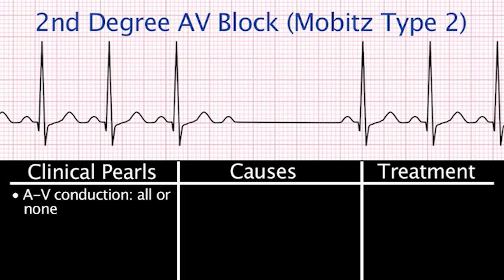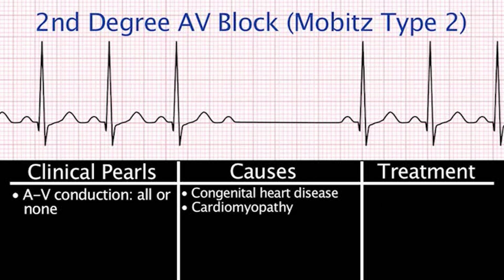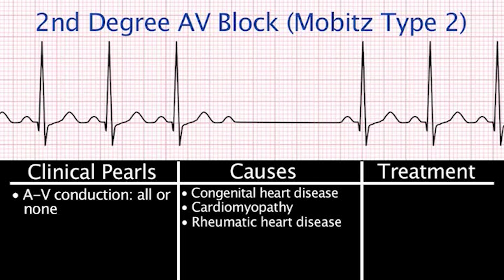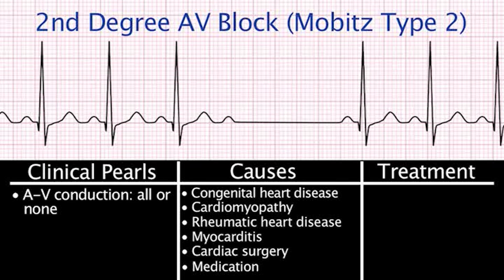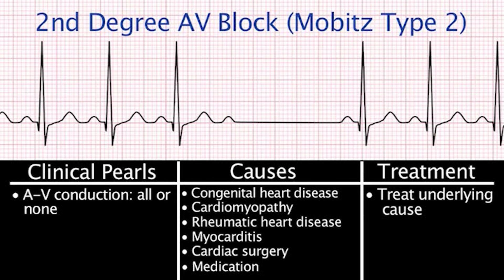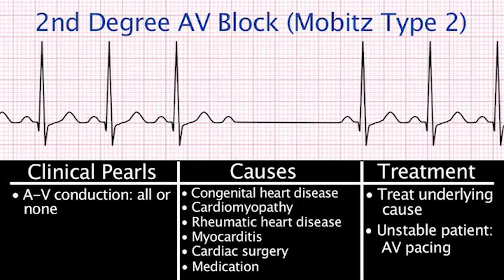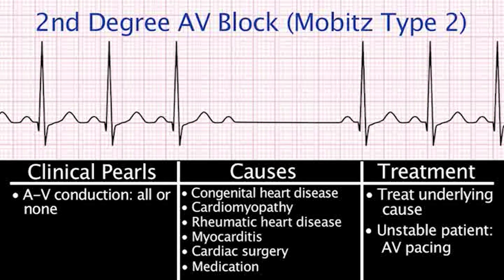Causes of Mobitz type 2 are the same as the other blocks: congenital heart disease, cardiomyopathy, rheumatic heart disease, myocarditis, surgical intervention such as septal defect repairs, and medications such as digitalis or beta blockers. Treatment is to address the underlying cause. If the patient is unstable, AV pacing is indicated to restore synchrony between the atria and the ventricles.